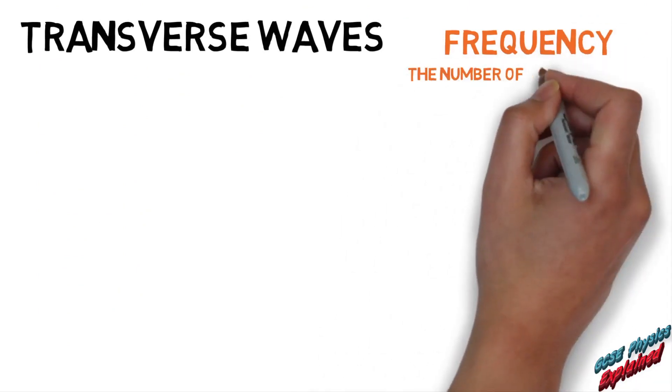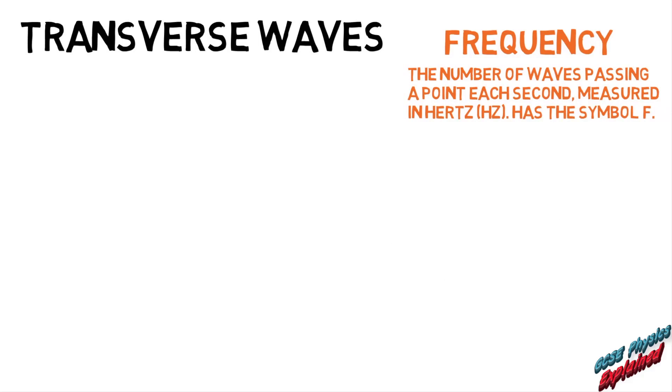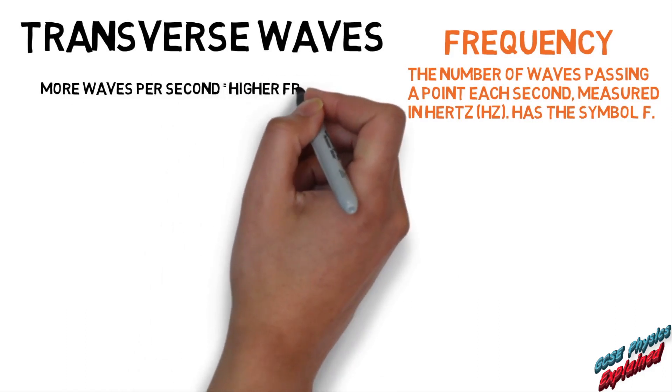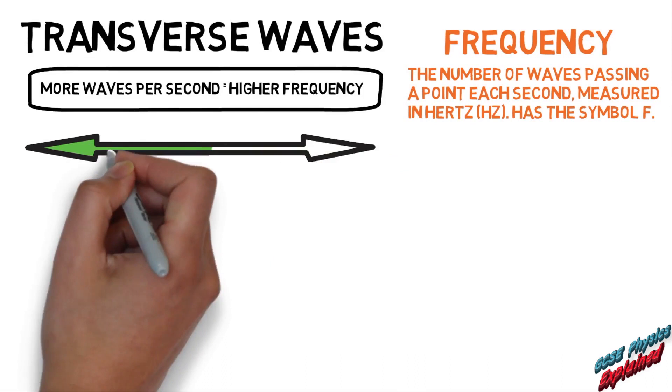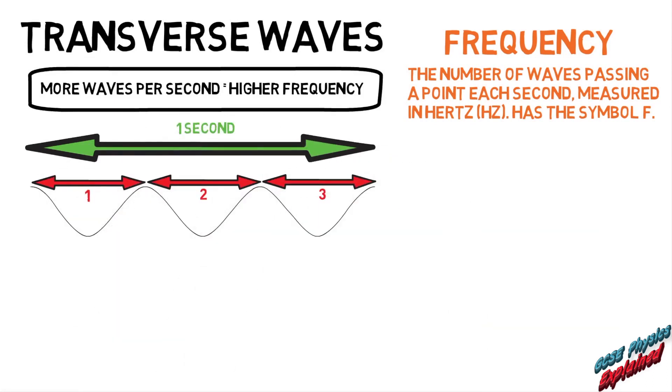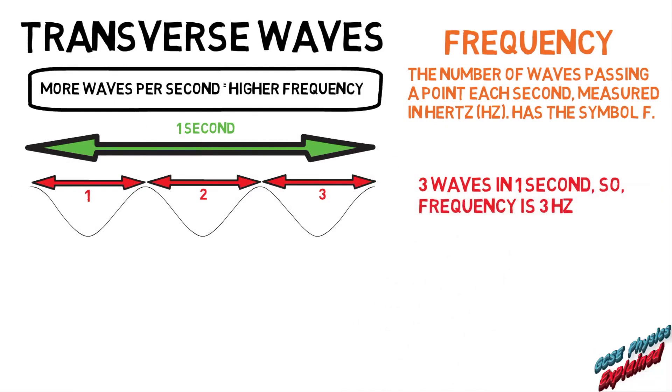Frequency is the number of waves passing a point each second, measured in hertz. It has the symbol F. More waves per second equals higher frequency. Examples: There are three waves in one second, so frequency is three hertz.